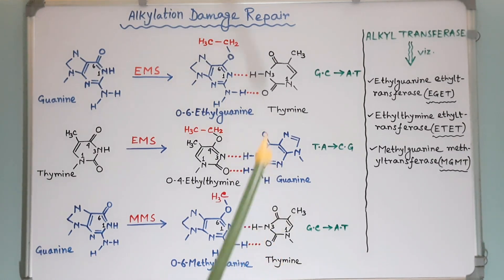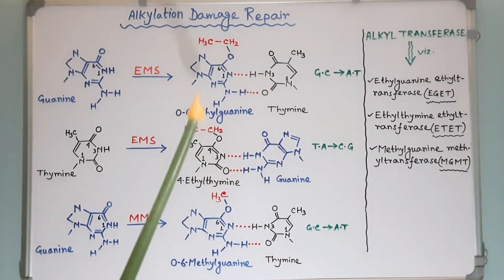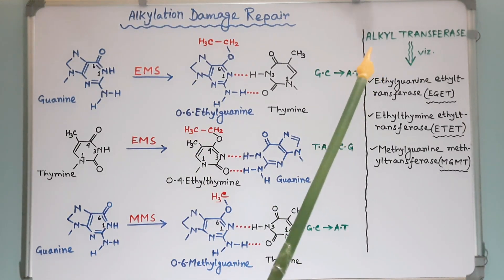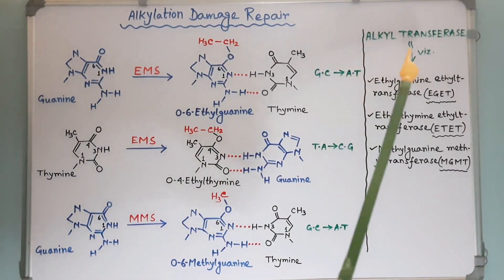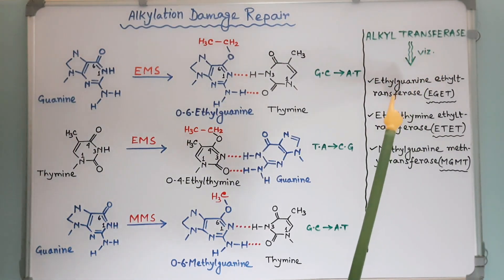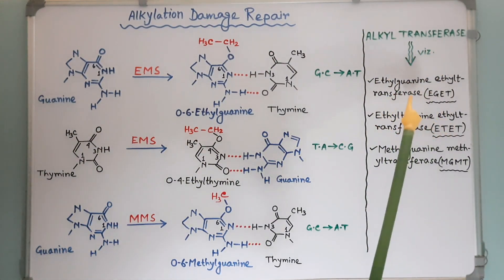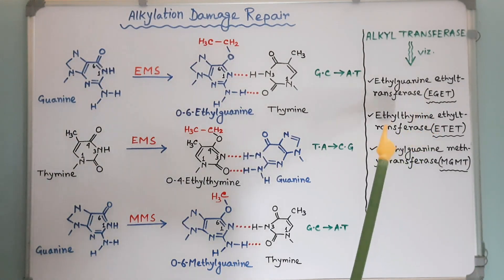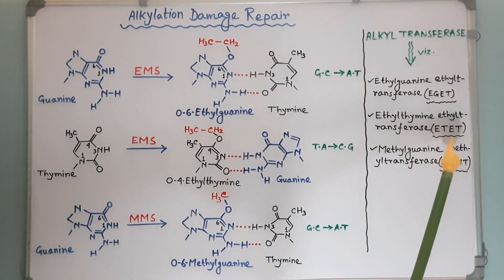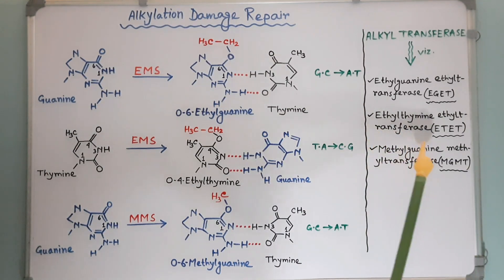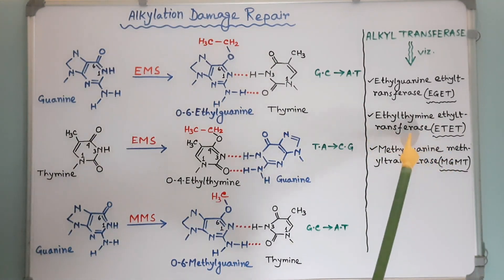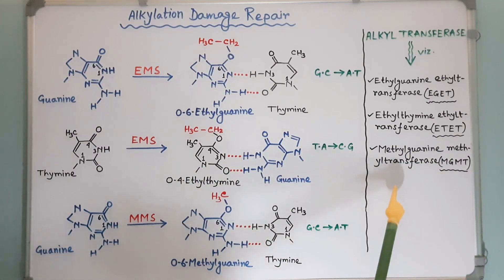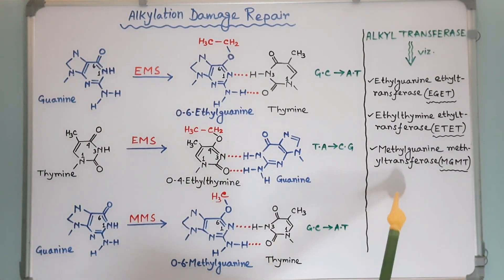Such kinds of alkylation damages are repaired by different types of DNA alkyltransferases. For example, ethylguanine ethyltransferase or EGET, ethylthymine ethyltransferase or ETET, methylguanine methyltransferase or MGMT, etc.